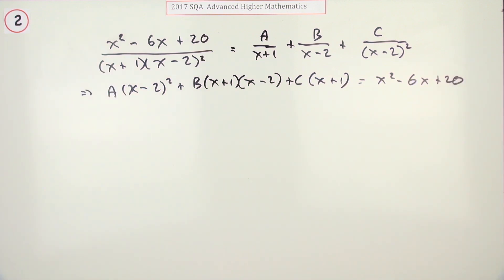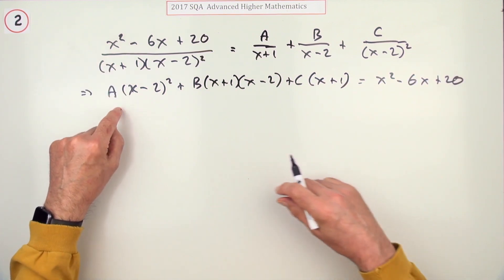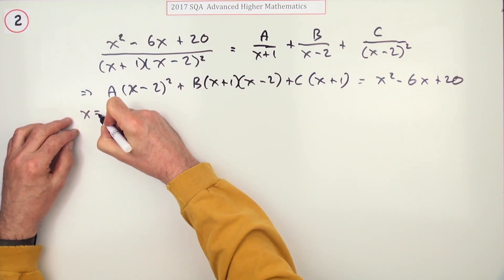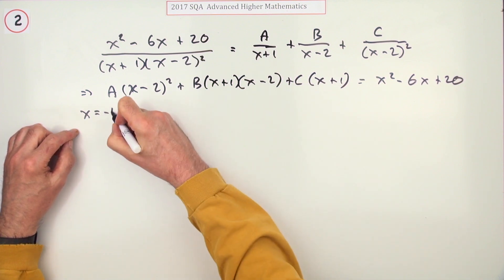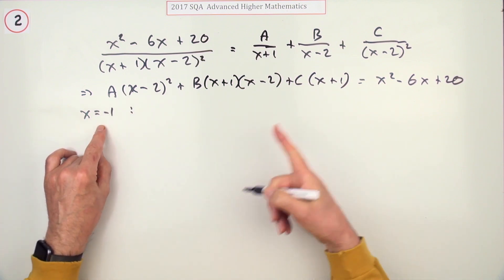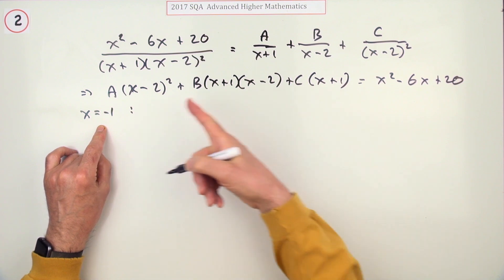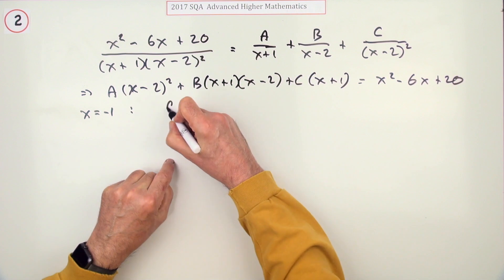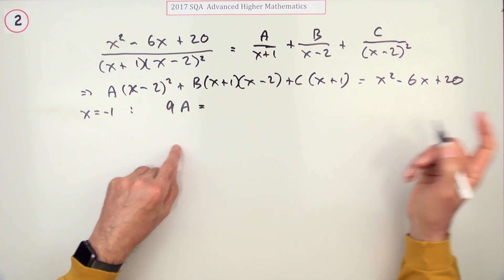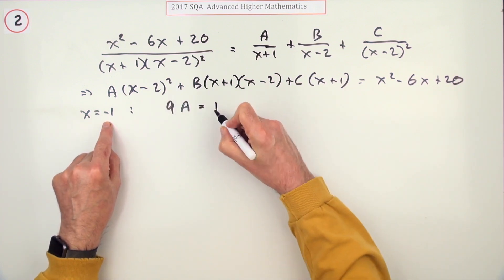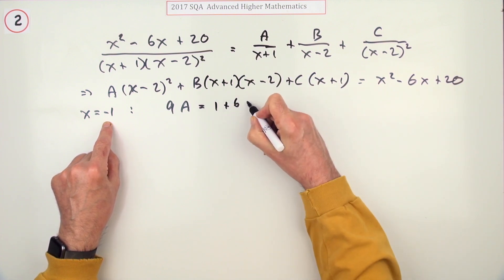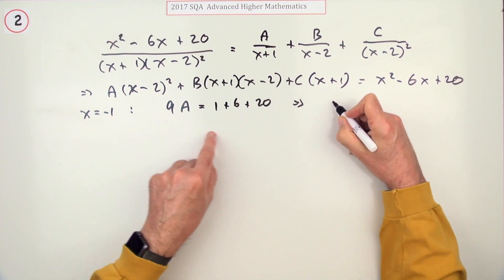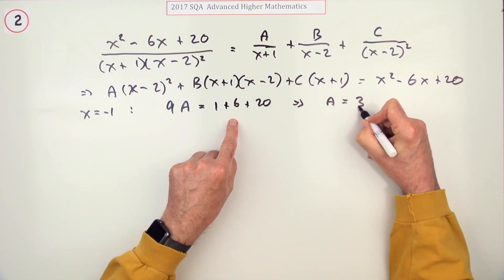That would be the next mark, so there's two marks left, so it's not going to be a mark each for A, B, and C. Which one first? Well, there's two possibilities here: 2 and -1. Go for -1 first. If x is -1, those terms disappear and you're just left with this one here. That's going to be -3 squared is 9, so you'll have 9A. It's 1 plus 6 plus 20, which is quite handy because it's 27, and 9 goes in nicely. 9 to 27 goes 3.